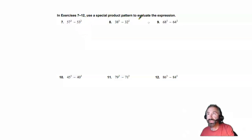And by the way, 7, 8, 9, 10, 11, and 12 are all a special product known as a difference of two squares. In other words, we take a square and we subtract another square.